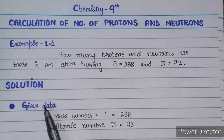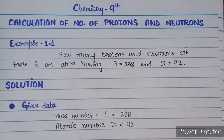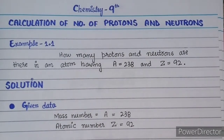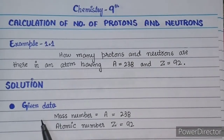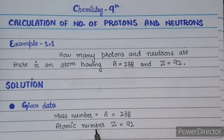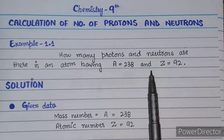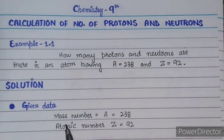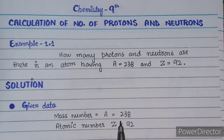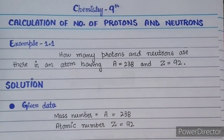In this main heading there will be all sub-headings — we will see them one by one. The first heading is 'Given Data.' In the given data, you put what was given in your numerical statement. Mass number was given — we have written it. And atomic number was given — we have also written it.